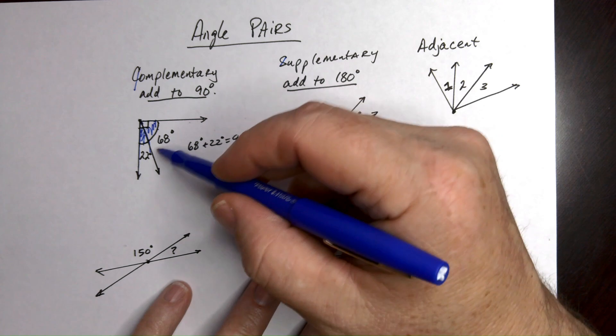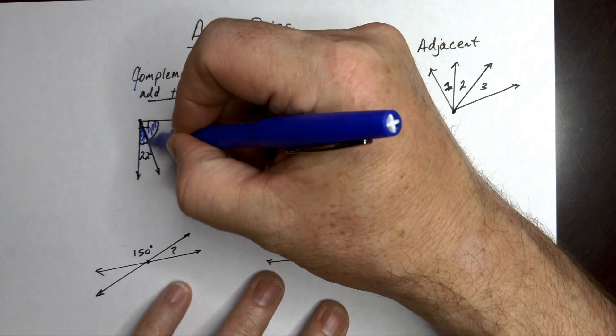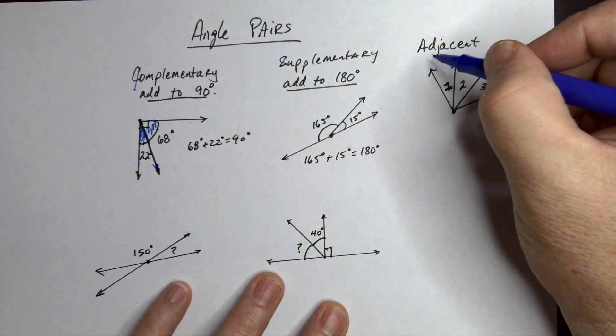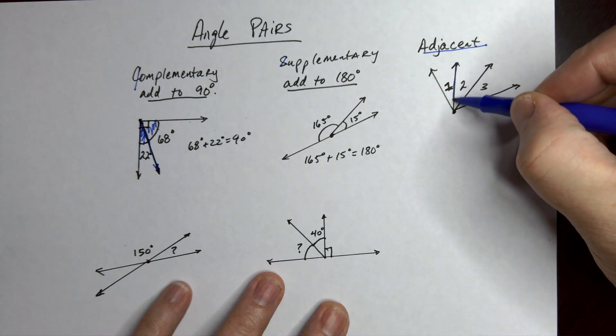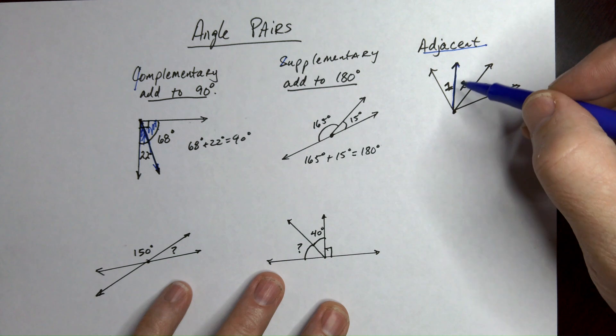These two angles being side by side like that, sharing one side, having a common vertex, those are called adjacent. So angles that are side by side that share a common leg, they're called adjacent.